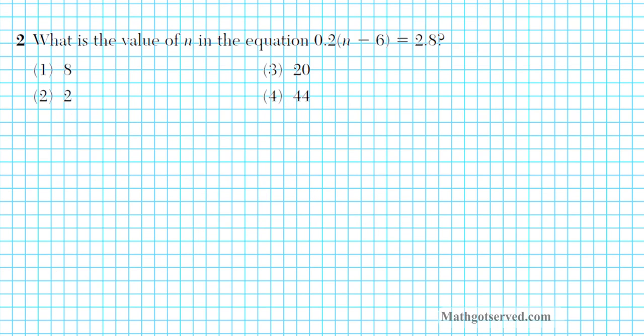Alright, let's take a look at problem number 2. It says, what is the value of N in the equation 0.2 times the quantity N minus 6 equals 2.8. So we're just solving an algebraic equation here. Now what makes this equation look complicated? It is the decimal. So how can we uncomplicate this complicated situation? We can get rid of the decimal.